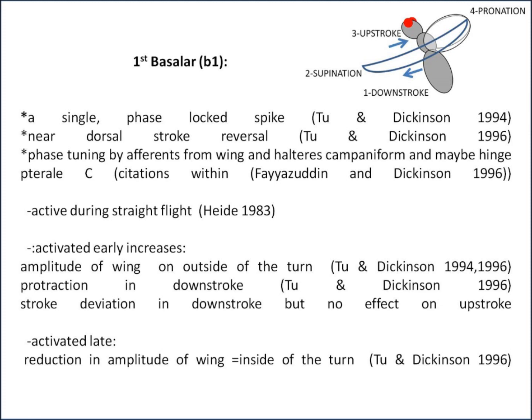I'll now go into a little more depth about some of the muscles. Probably the most important are the first two basilar muscles. The first basilar muscle, B1, is unique in that it's the only one that fires on every single wingbeat, and it produces a single phase-locked spike, usually near dorsal stroke — so pronation.